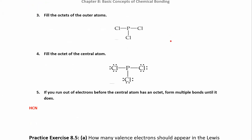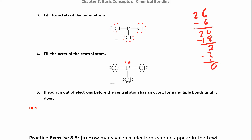I'm going to fill up the octets of the outer atoms first because they're more electronegative. I had 26 electrons, used six in bonds, leaving 20. Each chlorine already has two electrons from the bond, so it just needs six more to reach eight. After filling all three chlorines — using 18 electrons — I have two electrons left over. Those leftover electrons go on the center atom, phosphorus. So I've now used all 26 electrons: six in bonds, 18 around the chlorines, and two on phosphorus.